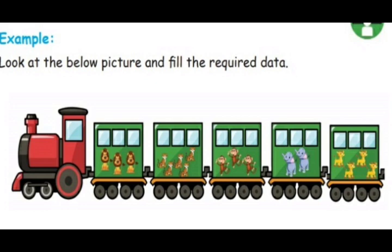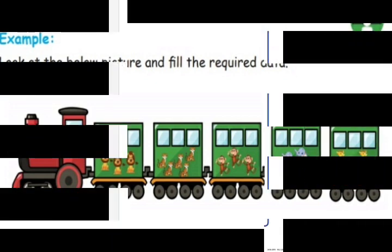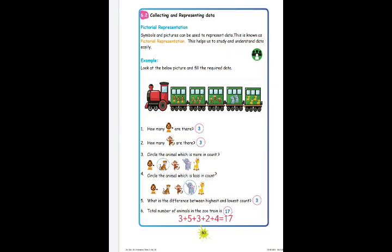Now let's see the answers. First question: how many lions are there? We found the lion in the very first compartment, next to the engine. There are three lions. Second question: how many monkeys are there? In the third compartment there were monkeys — three monkeys. So the answer is three.